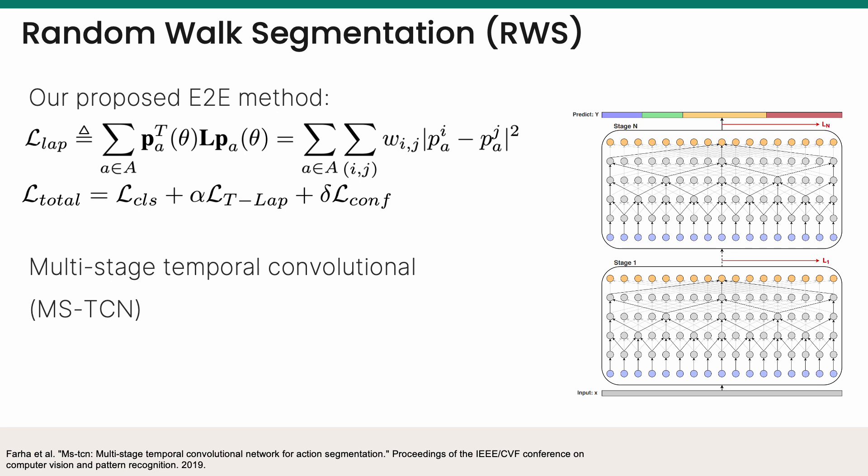applied only over the timestamps, a smoothness loss based on the Laplacian, and a confidence loss, which enforces monotonicity in the action probability prediction.